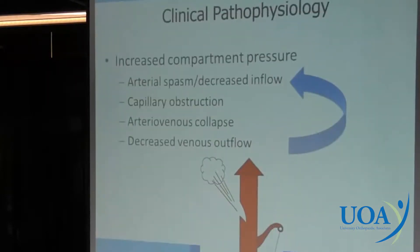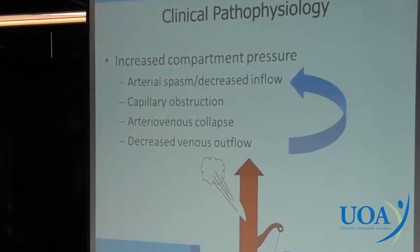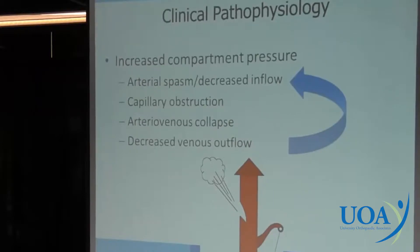Basically what happens is you get arterial spasm as the muscles swell. You have decreased inflow, the capillaries get obstructed, the arteriovenous complex kind of collapses, and then you have no outflow — it's a vicious cycle. There's too much pressure, and it's repetitive. As you exercise more, it gets worse and worse. When you finally stop exercising, it goes away.